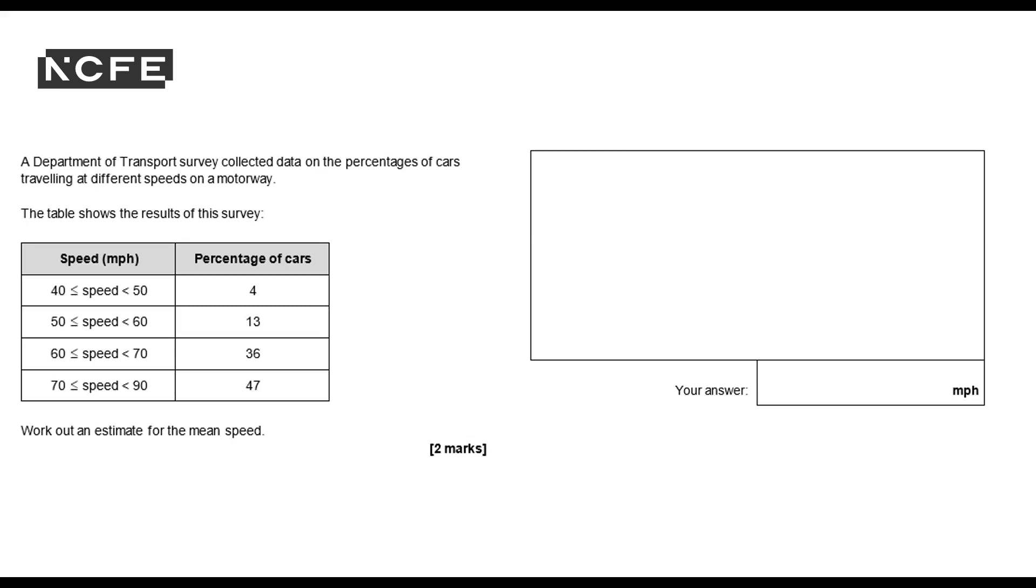A Department of Transport survey collected data on the percentages of cars travelling at different speeds on a motorway. The table shows the results of this survey. We've got the speed given within a grouping and the percentage of cars. Work out an estimate for the mean speed.